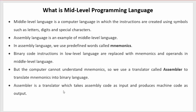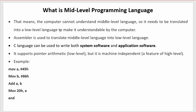An assembler is a translator which takes assembly code as input and produces machine code as output. The assembler takes the mnemonics or assembly code as input and, after translating it, produces machine code as output which can be easily understood by the computer. This means the computer cannot understand mid level language, so it needs to be translated into low level language.